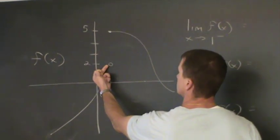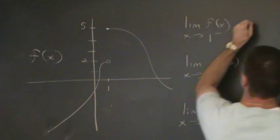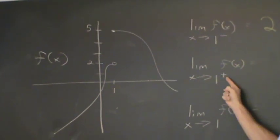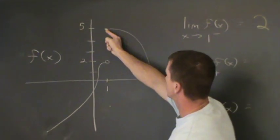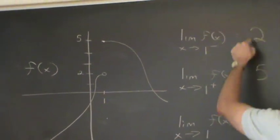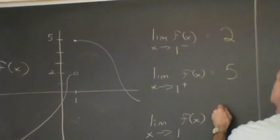As you approach one from the left side, the y value's getting very close to two. As you approach one from the right side, getting very close to five. And since these two are not the same, this does not exist.